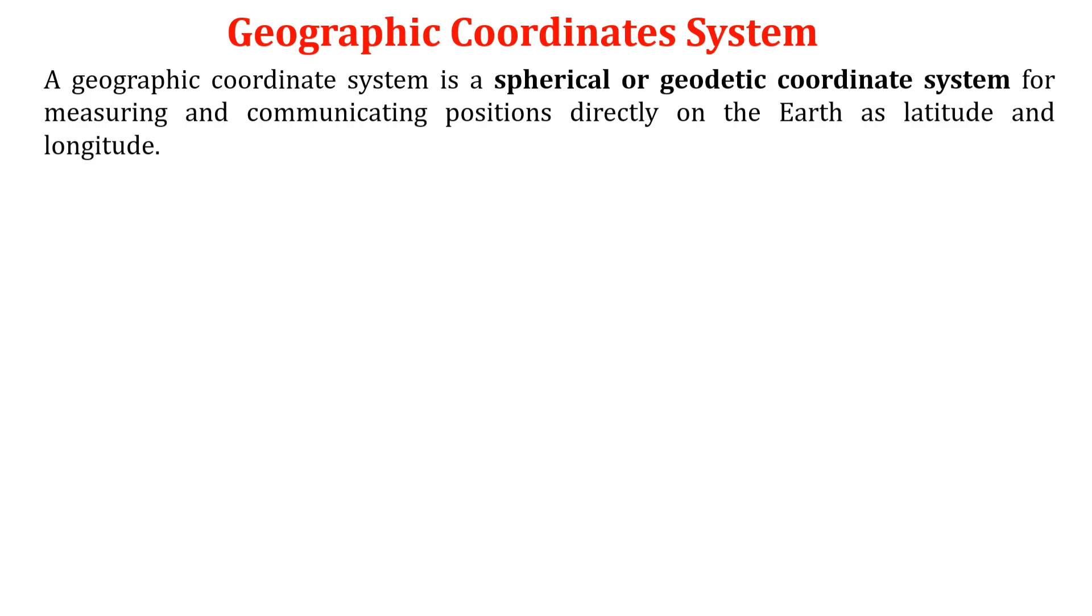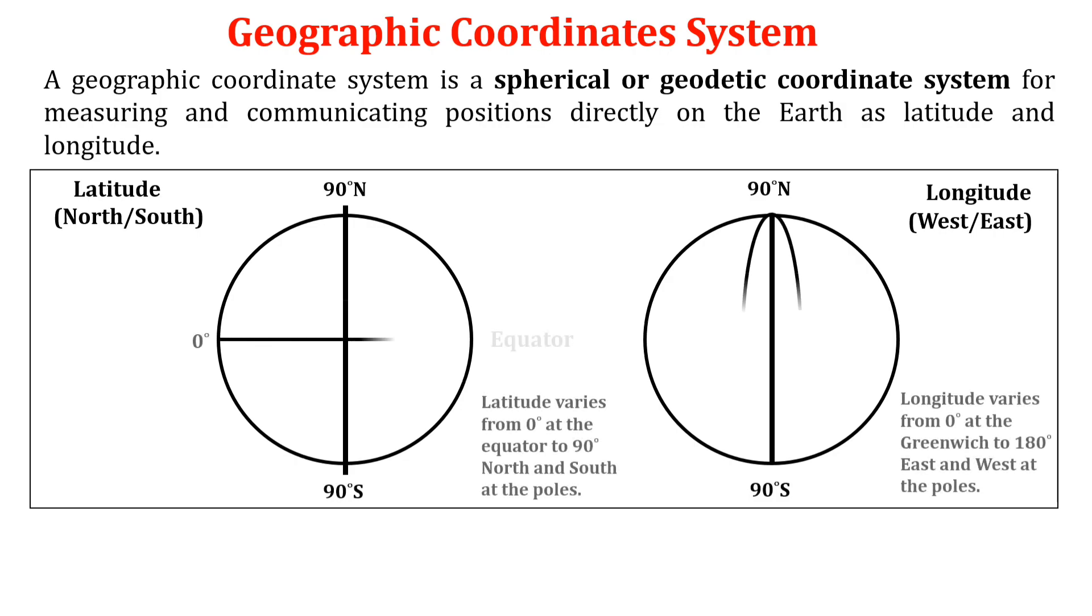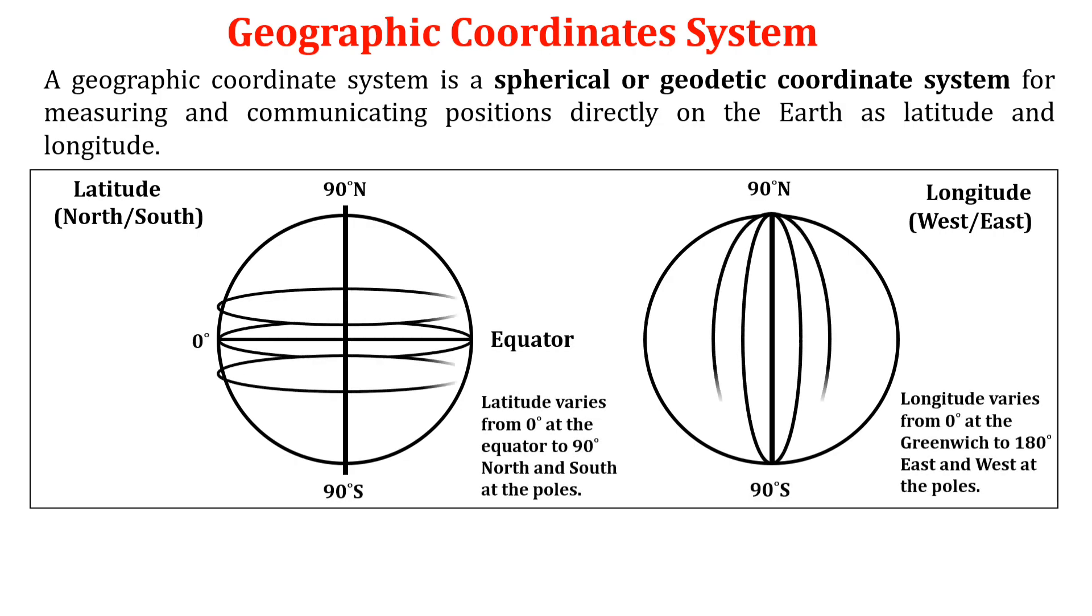A geographic coordinate system is a spherical or geodetic coordinate system for measuring and communicating positions directly on the Earth as latitude and longitude. It is the simplest, oldest, and most widely used of the various spatial reference systems.